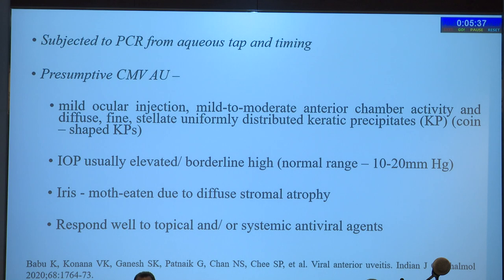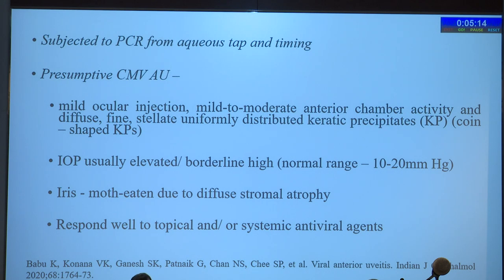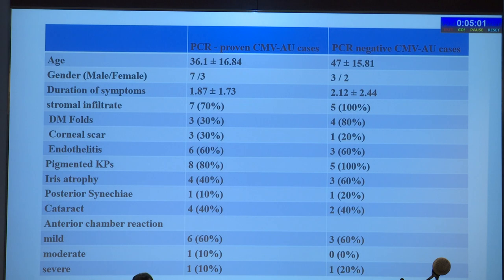PCR-positive cases were taken as PCR-proven CMV anterior uveitis. PCR-negative cases who responded well to topical and/or systemic antiviral agents were considered presumptive CMV anterior uveitis. These two groups were compared. Ten cases were PCR-proven and five had PCR-negative CMV anterior uveitis. Comparison of demographic features showed age was slightly younger in the PCR-proven group, males had a preponderance in the PCR-proven group, and in the PCR-proven group only 20% required glaucoma surgery.